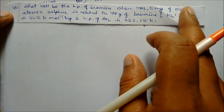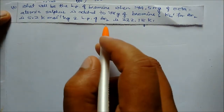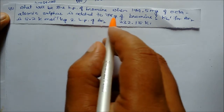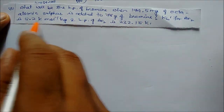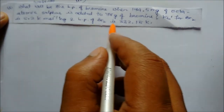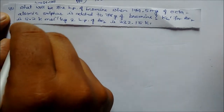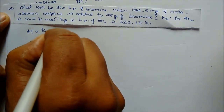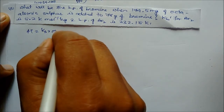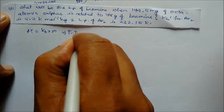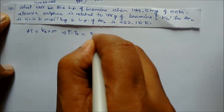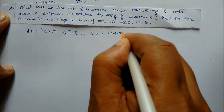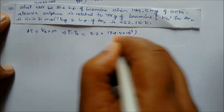Next problem: What will be the boiling point of bromine when 174.5 milligrams of octa-atomic sulfur is added to 28 grams of bromine? Kb and the boiling point of bromine are given. Using the same formula: delta T = Kb × m, we write: T - Tb = 5.2 × (174.5 × 10⁻³) / molar mass × (1000 / 78).